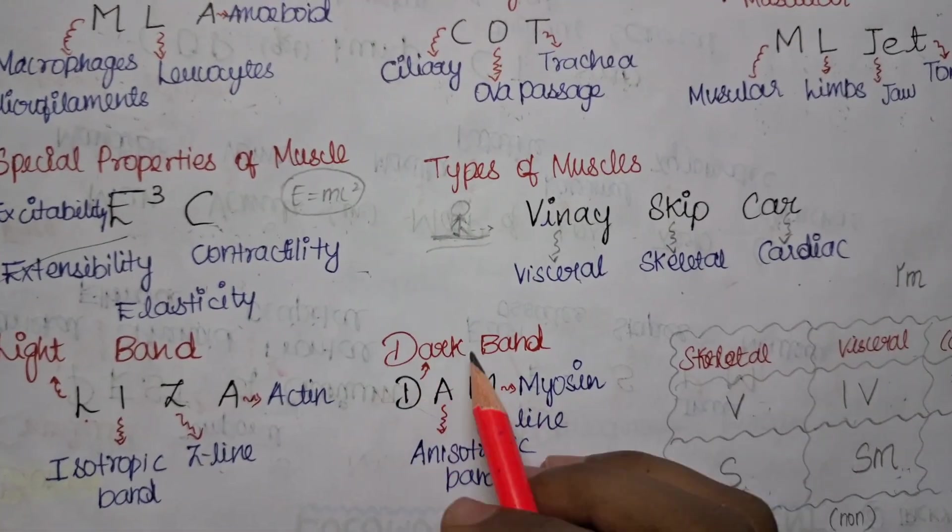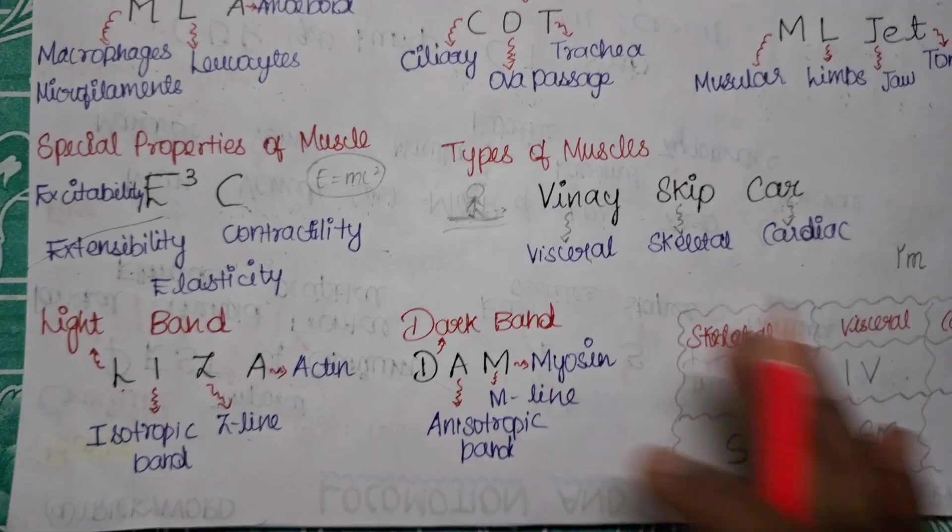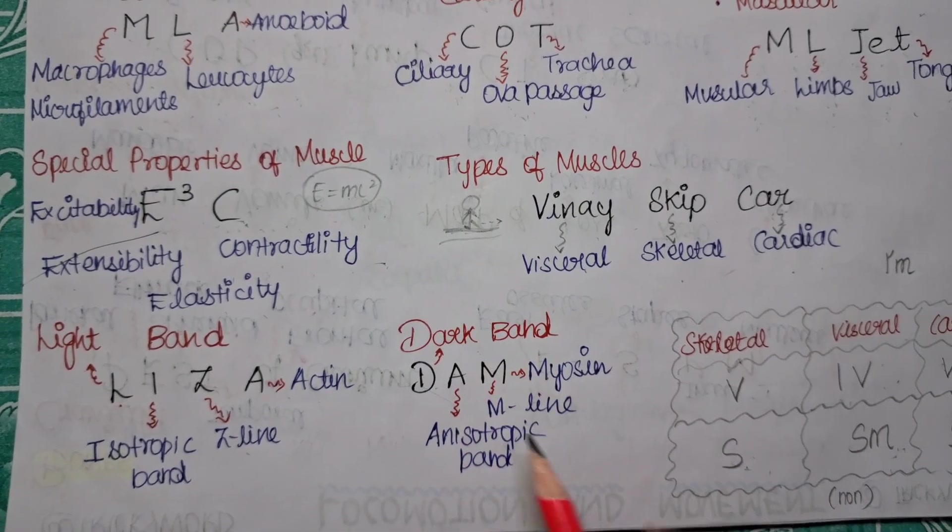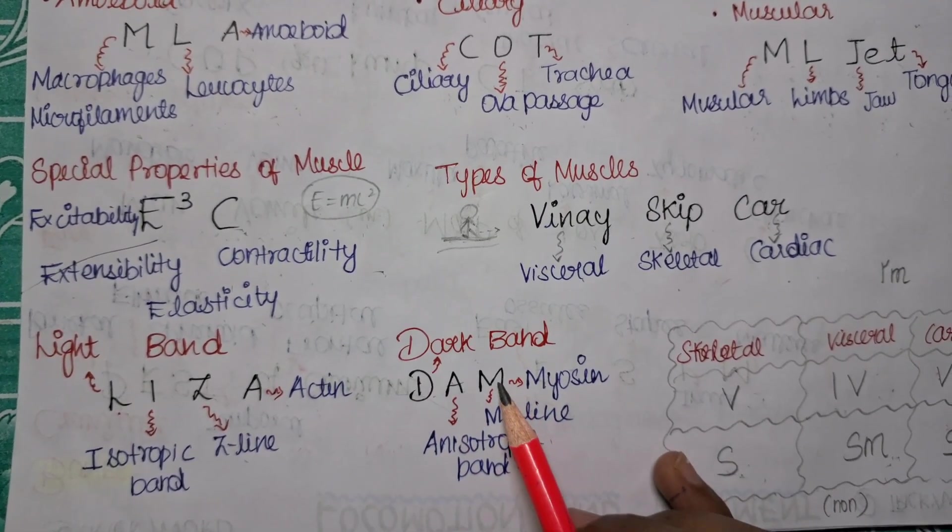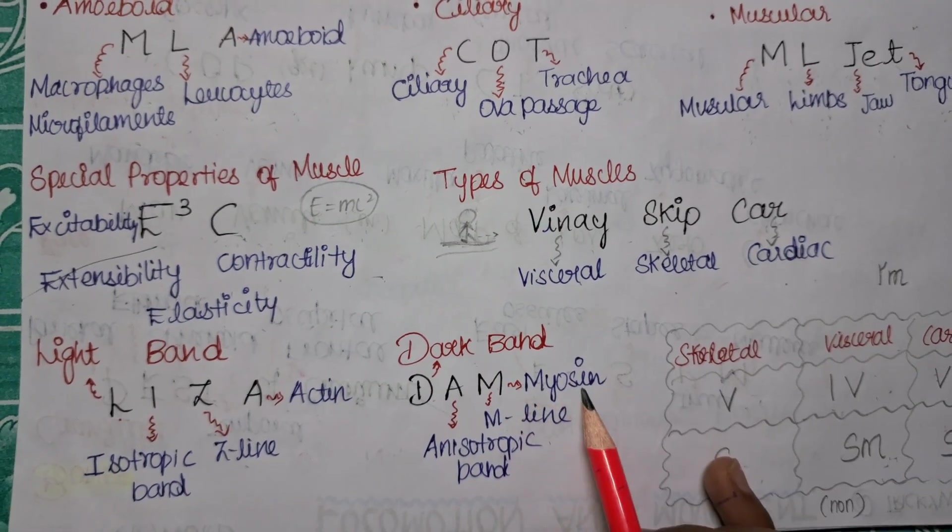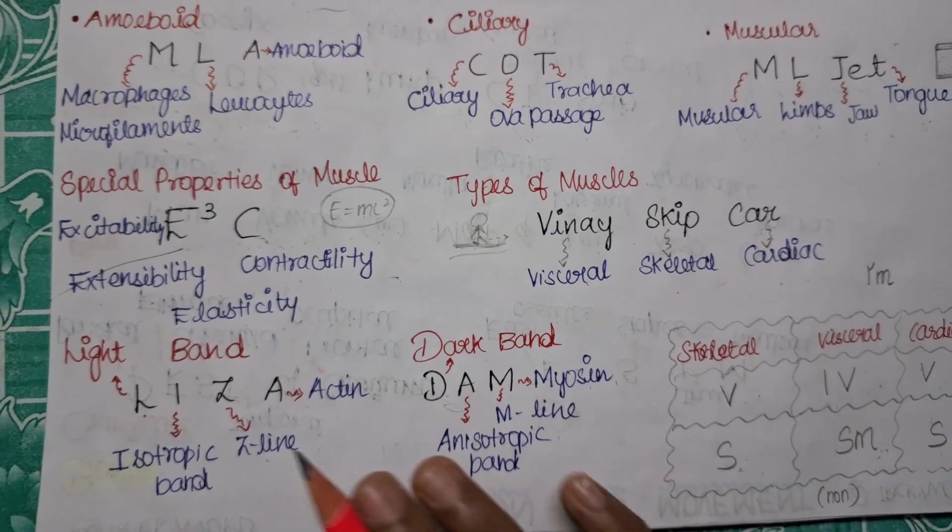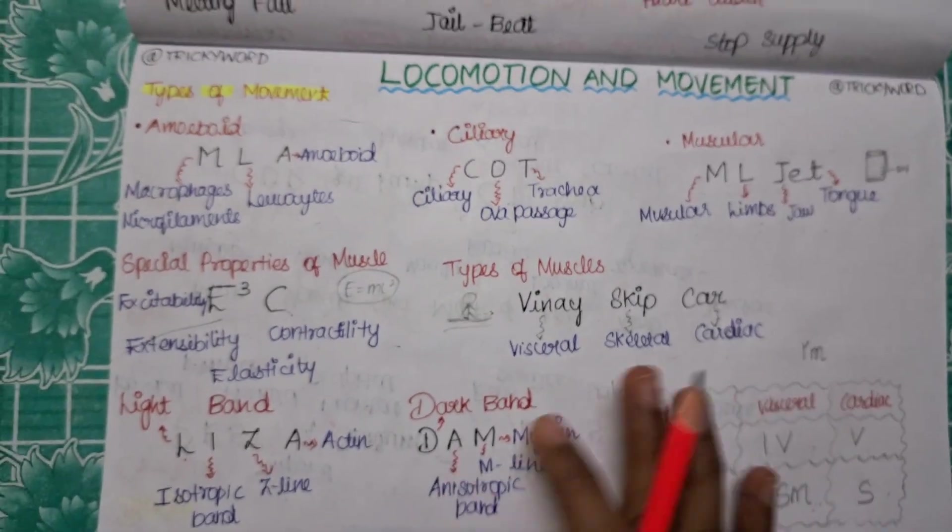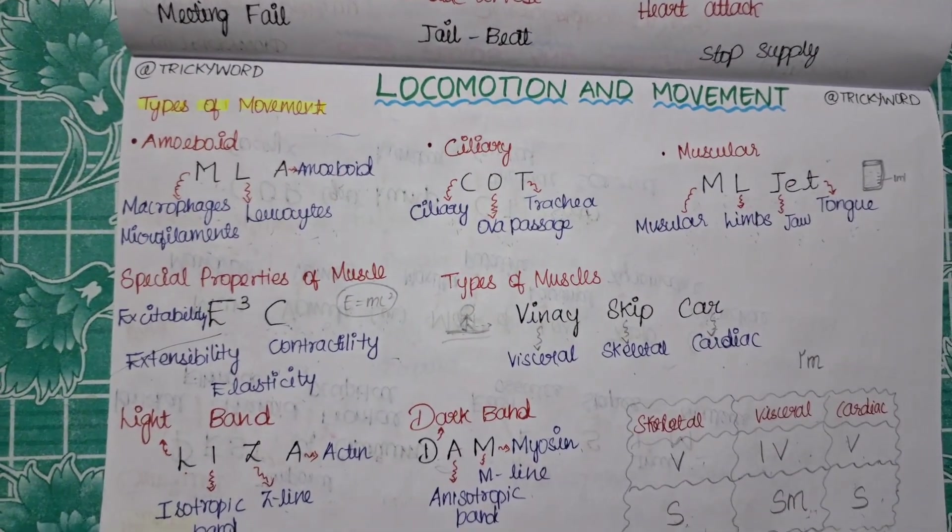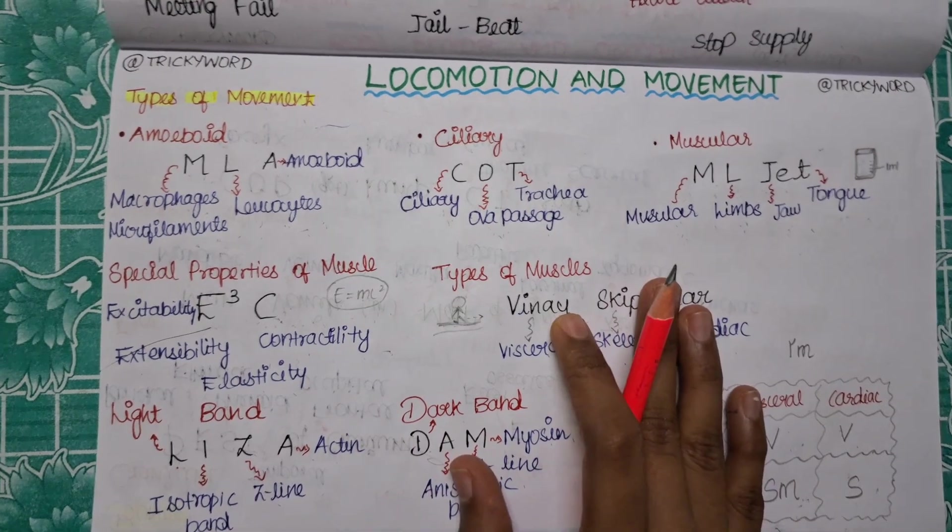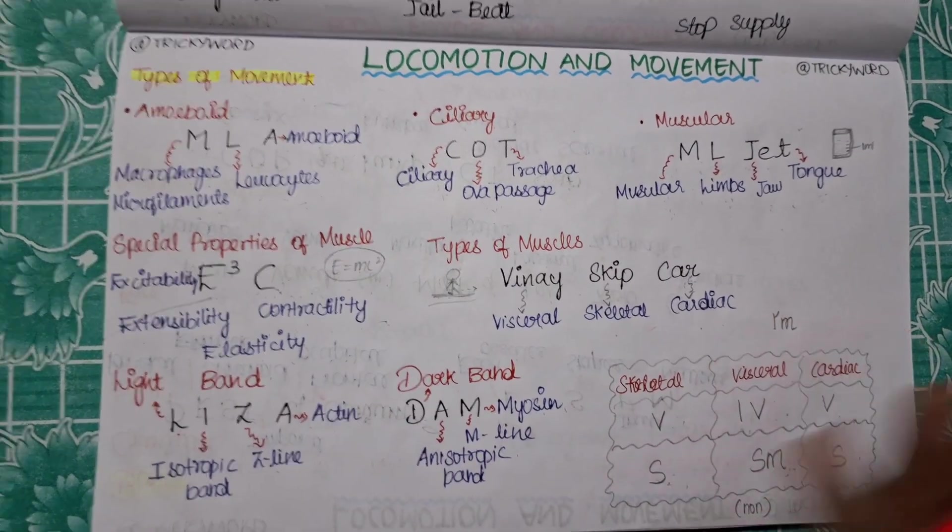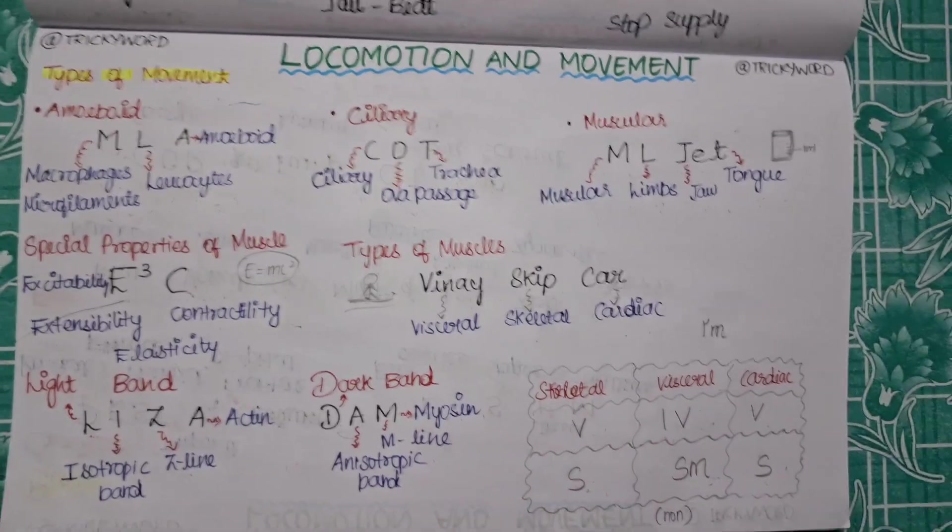Now coming to the dark band, it is given by DAM. D is for your dark, A for anisotropic, M for M line and also it stands for myosin. So are we clear with light band and dark band? In this page we have covered the types of movement, special properties of your muscle, what are the types of muscle and whether they are voluntary or striated or smooth, and also your light band and dark band.